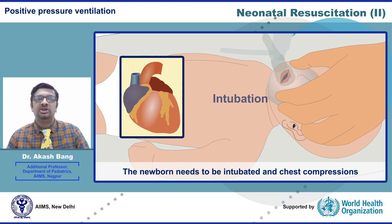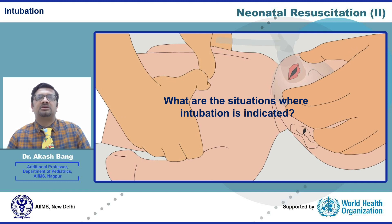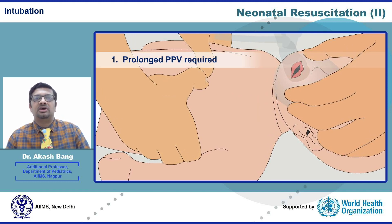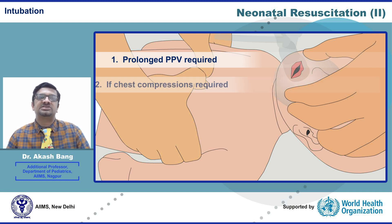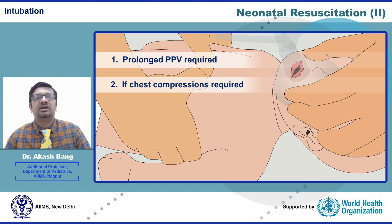Let us first learn about intubation. The main indication is when a newborn is not responding to PPV and has a heart rate below 60 even after effective PPV for 30 seconds. Chest compressions will need to be started, and before starting chest compressions, it is recommended that intubation should be done. That is one indication.